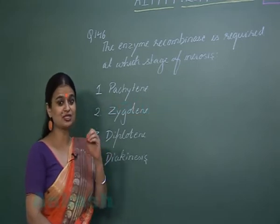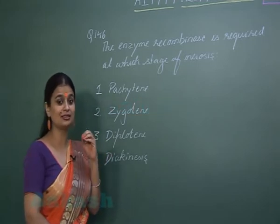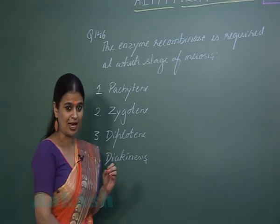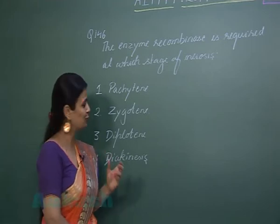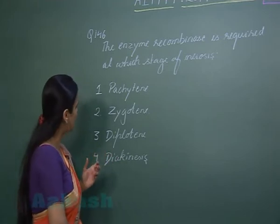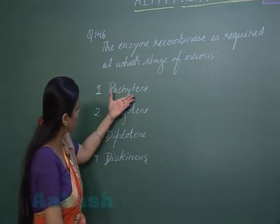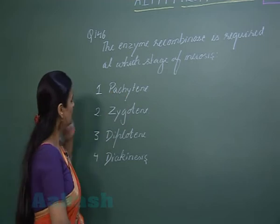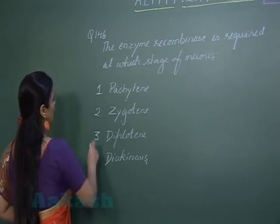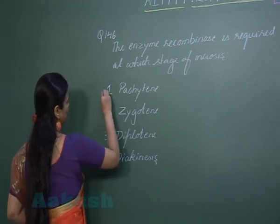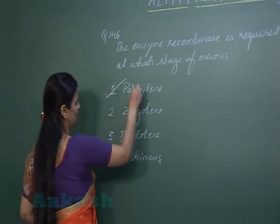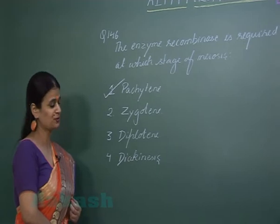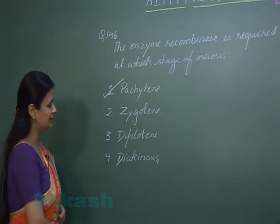The enzyme required for crossing over is recombinase, and crossing over occurs at the pachytene stage of meiosis. So the right option for question number 146 is option number 1.